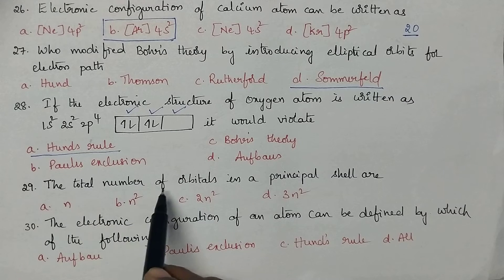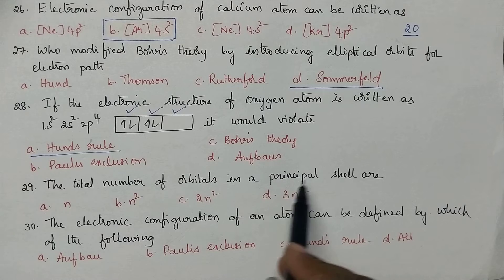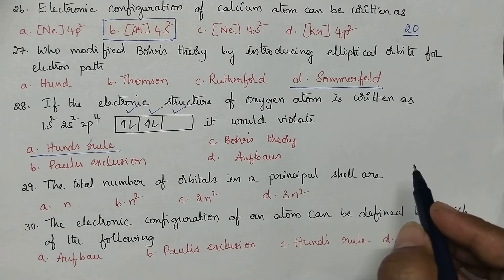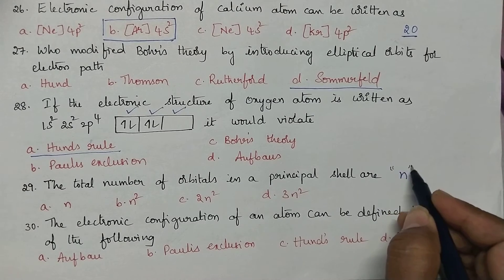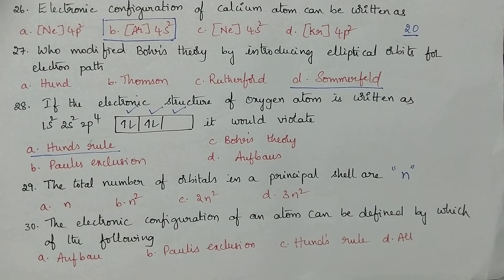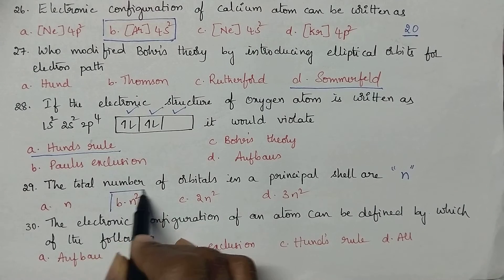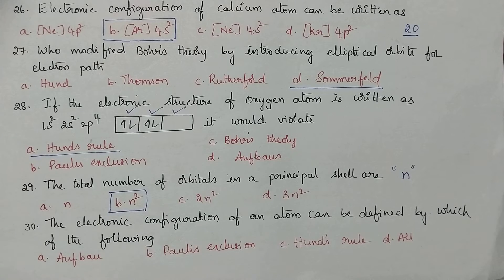The total number of orbitals in a principal shell: principal shell means it is n. So the total number of orbitals can be obtained by n square. So option B is the right answer.